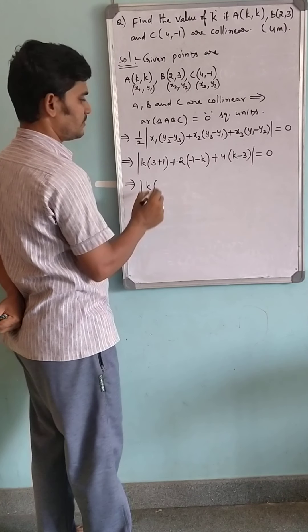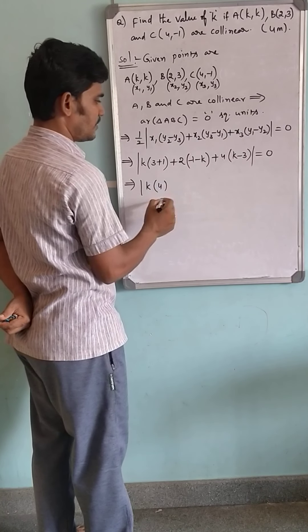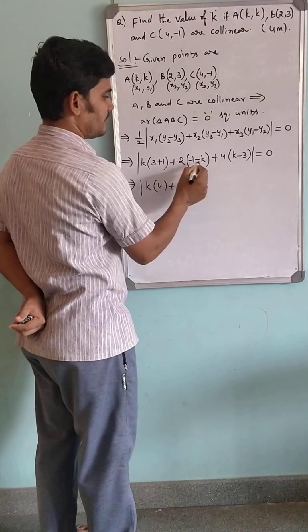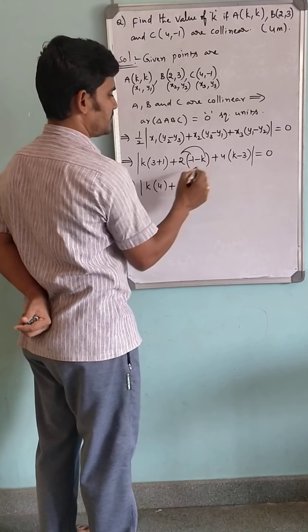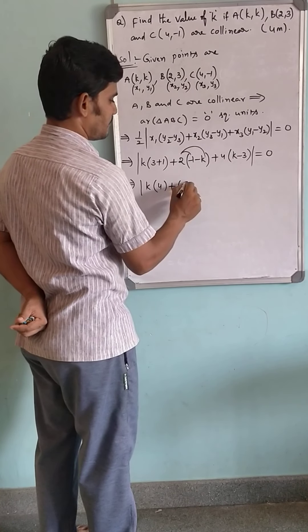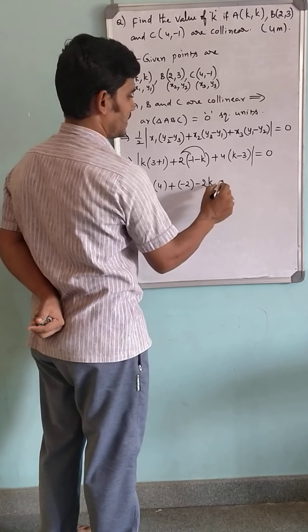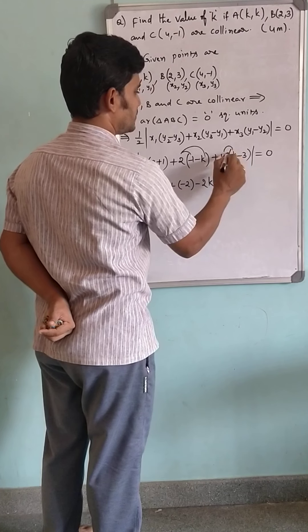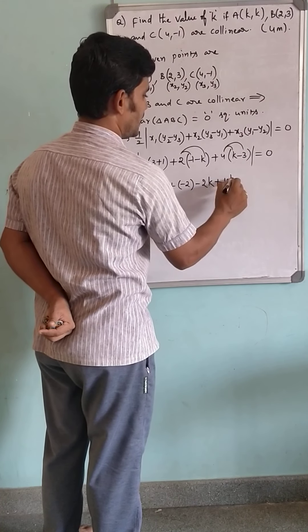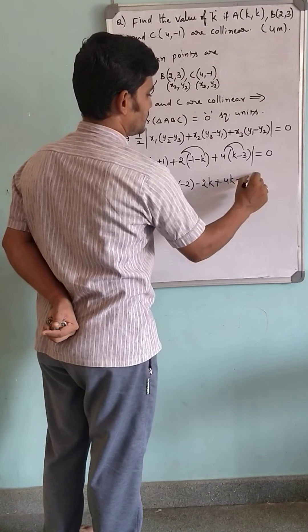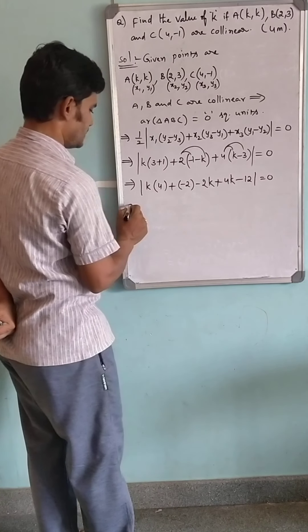It is equal to 0. K into 3 plus 1 is 4. As a variable and constant, apply the distributive property. Plus and minus becomes minus. Minus 2 into K is 2K. Minus 2 minus 2K.